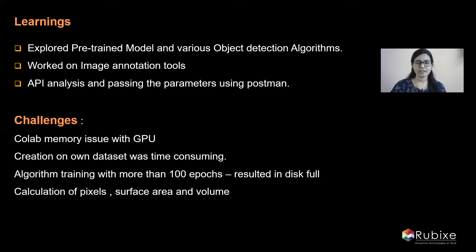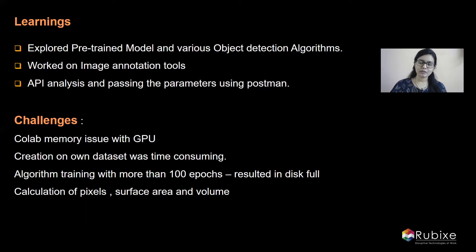Calculating surface area and volume weight for a single food item was manageable, but it became challenging when handling multiple food items on a plate. We overcame this challenge and were able to do calculations for all food items and food classes, as you've seen in the results. In spite of all these challenges, we were able to integrate our model with Flask, which will be explained by my colleague Garima.